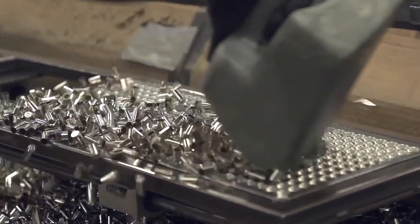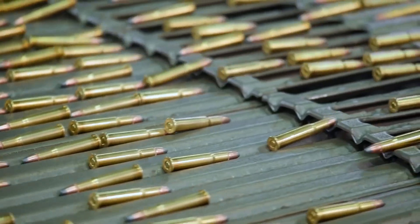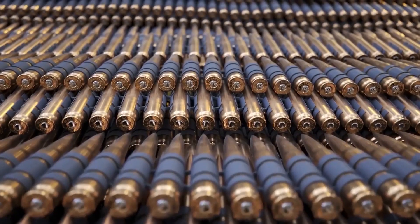Jacketed bullets require additional steps. Copper jackets are typically formed from copper cups drawn into shape similar to brass cases. The lead cores are then seated into these jackets and swagged, compressed, to their final dimensions.